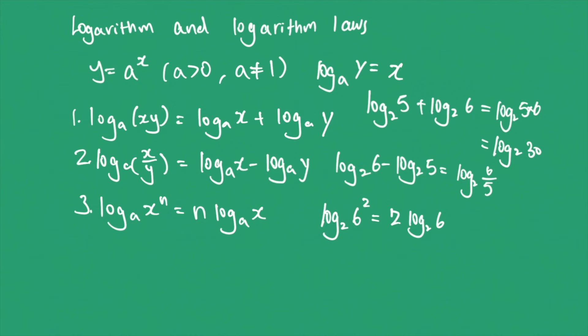The fourth law is log base a of 1 over x equals negative log base a of x. For example, log base 2 of 1 over 6 equals negative log base 2 of 6.